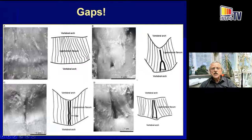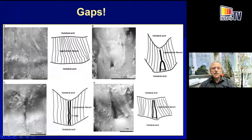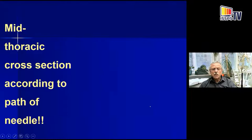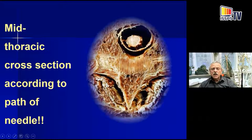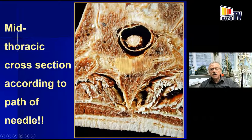In the thoracic spine there are considerable gaps between the two ligamentum flavum of each side, sometimes really large ones — keep this in mind. Here is a mid-thoracic cross section according to the path of the needle: if you come in at a steep angle from caudal to cranial, note the apparent thickness of the ligamentum flavum — it appears thicker simply because the path length is longer when going from inferior to superior. A beautiful gap is also clearly visible here.